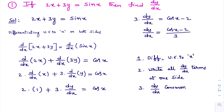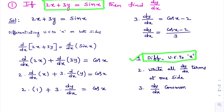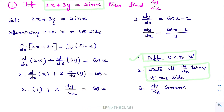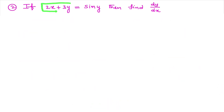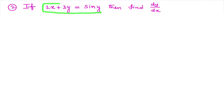Throughout this implicit differentiation, you observe three points: first, identify it is an implicit function; second, differentiate with respect to x on both sides; third, write all dy/dx terms at one side, remaining terms other side, then take dy/dx common — and easily write dy/dx. Now observe the second question: 2x + 3y = sin y, then find dy/dx. Is y clearly stated in terms of x? No, so it is an implicit function.